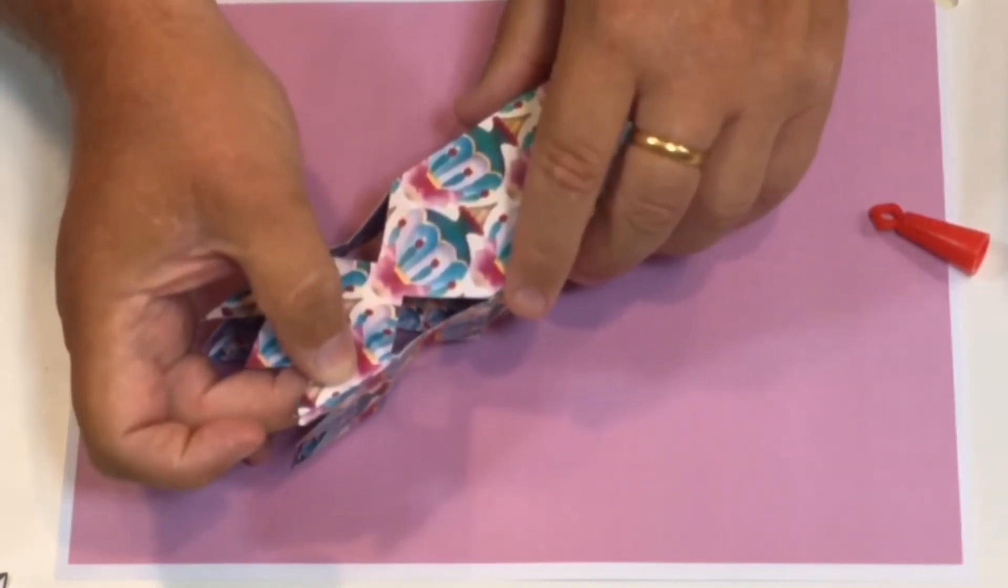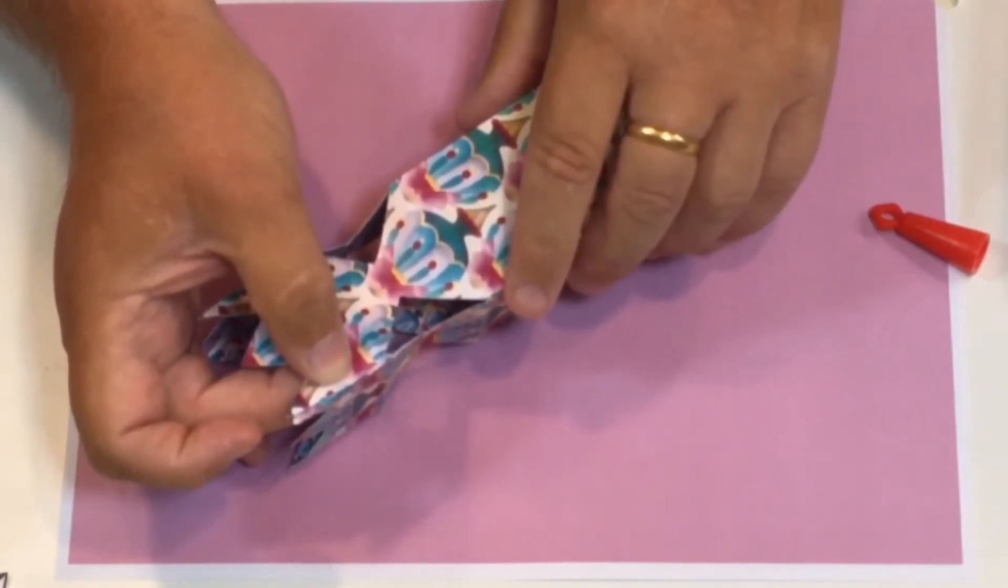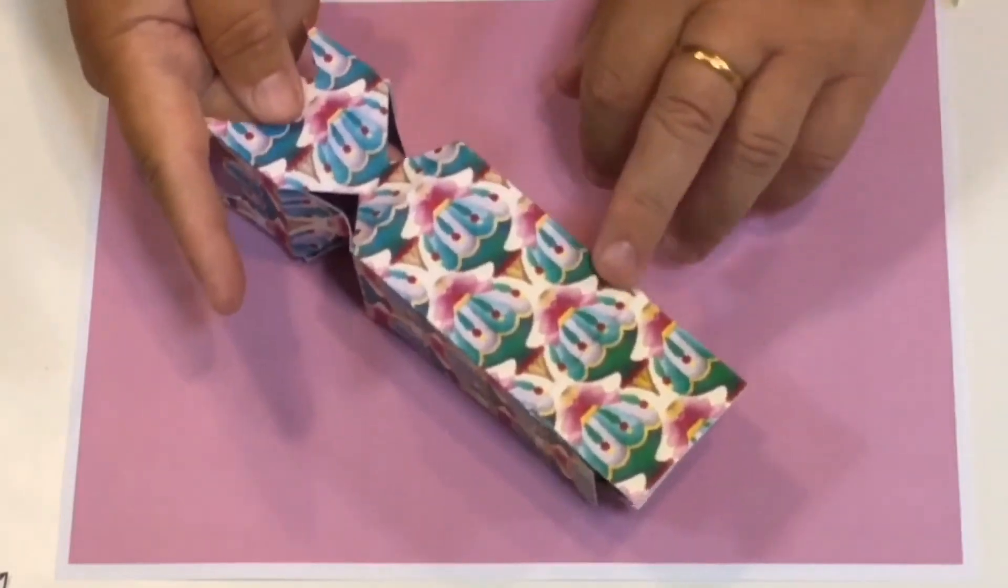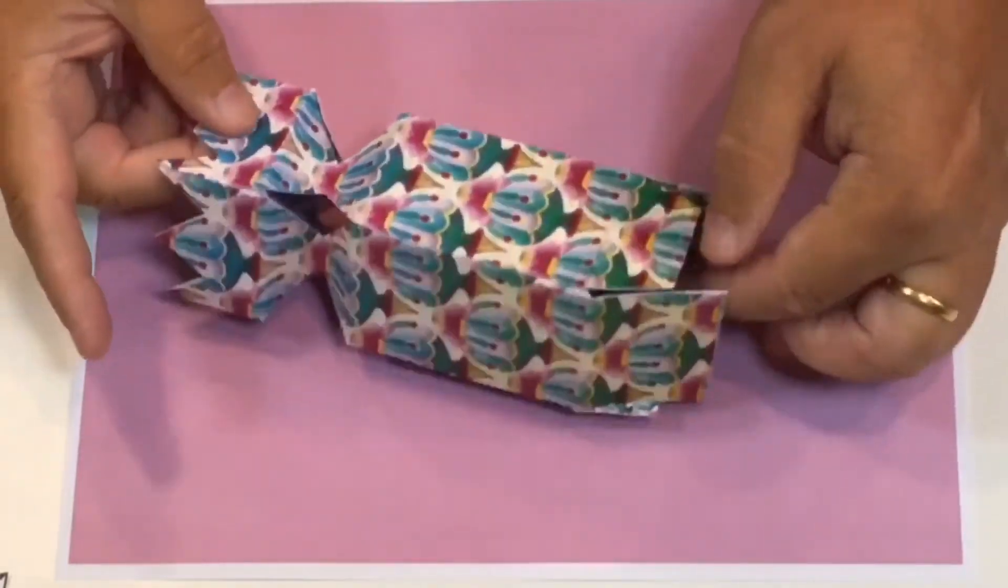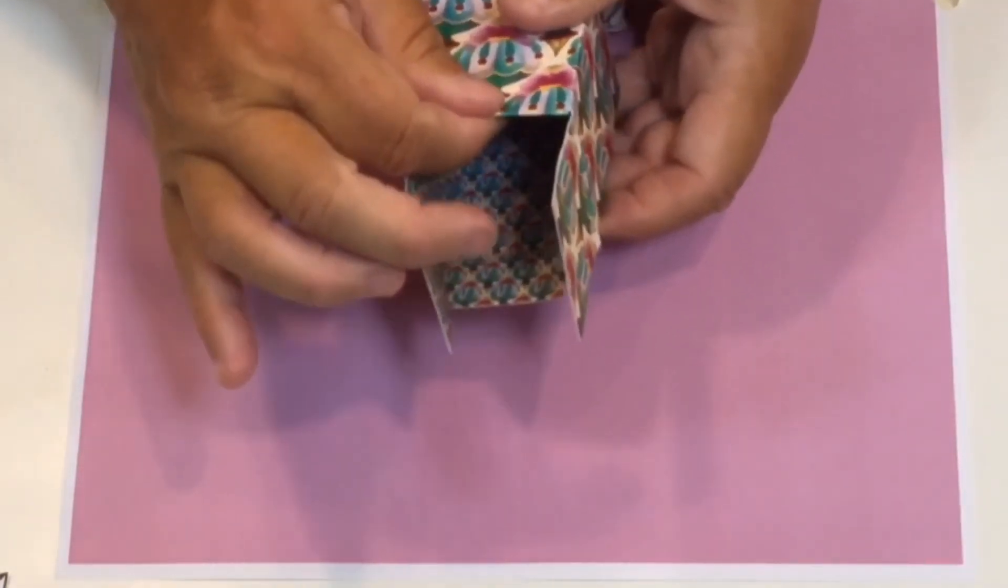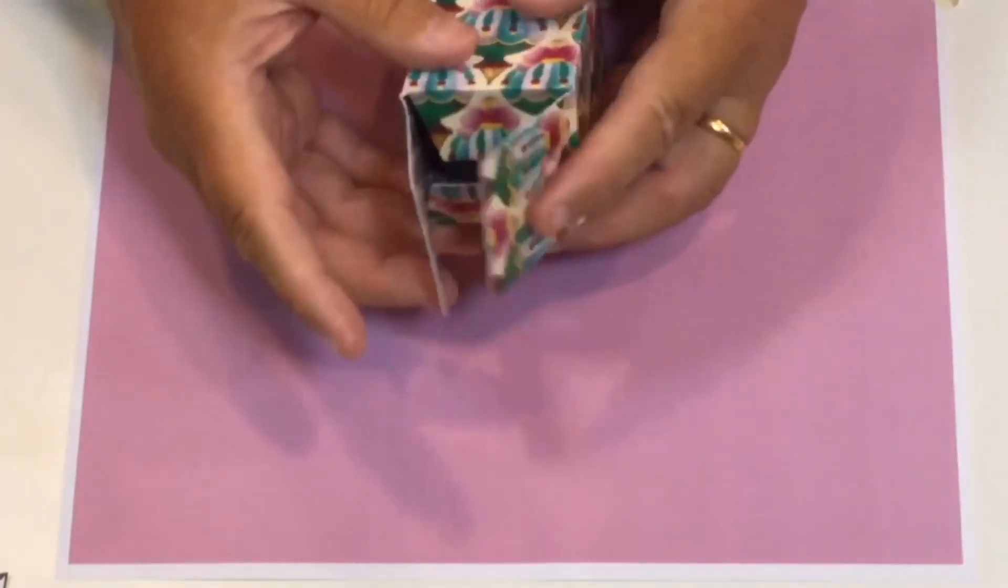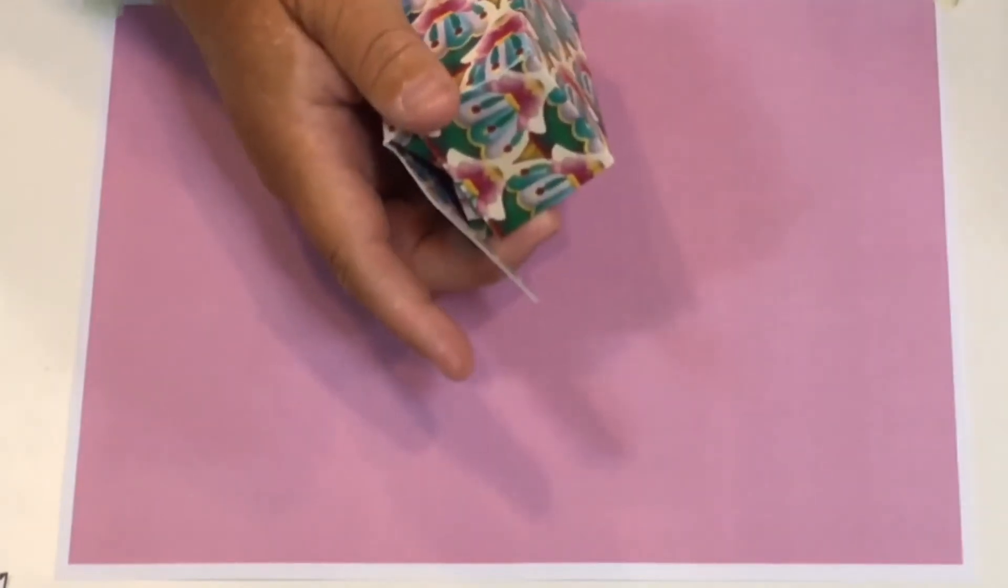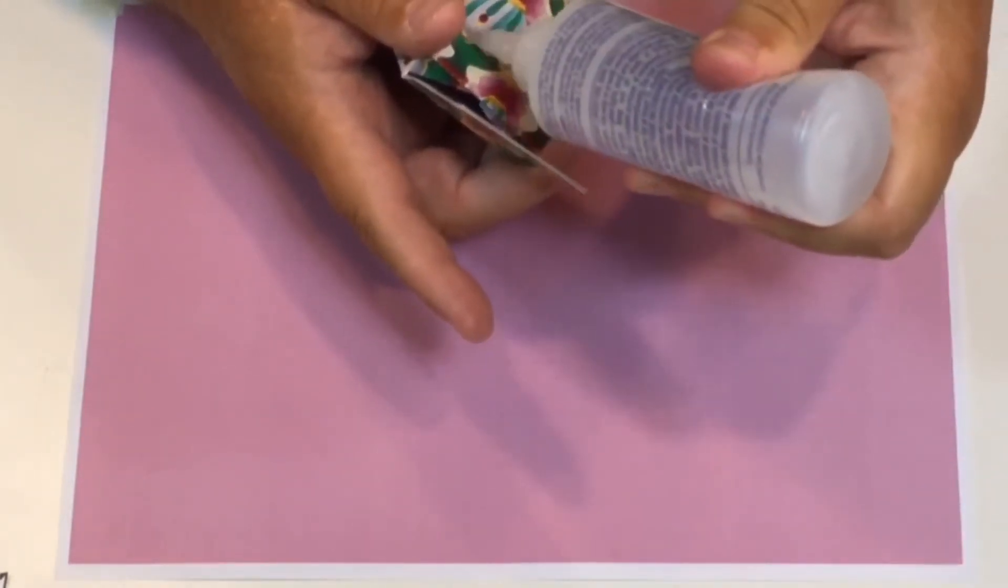And just hold it in position until it's stuck. So now that has securely stuck together and that's what you end up with. Now all you've got to do is fold the flaps in at the bottom. Fold them down, fold that in, fold that over, and on the final fold I just like to add a little bit of glue there.